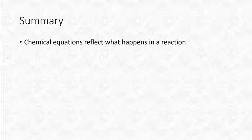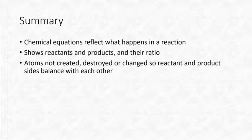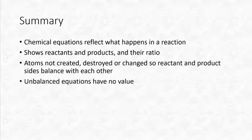In summary: chemical equations reflect what's actually happening in the reaction, including the ratios of reactants and products. Atoms are not created, destroyed, or changed in reactions, so both sides must balance. Unbalanced equations have no value — they don't accurately reflect what's happening. Next time we'll look at some chemistry calculations.